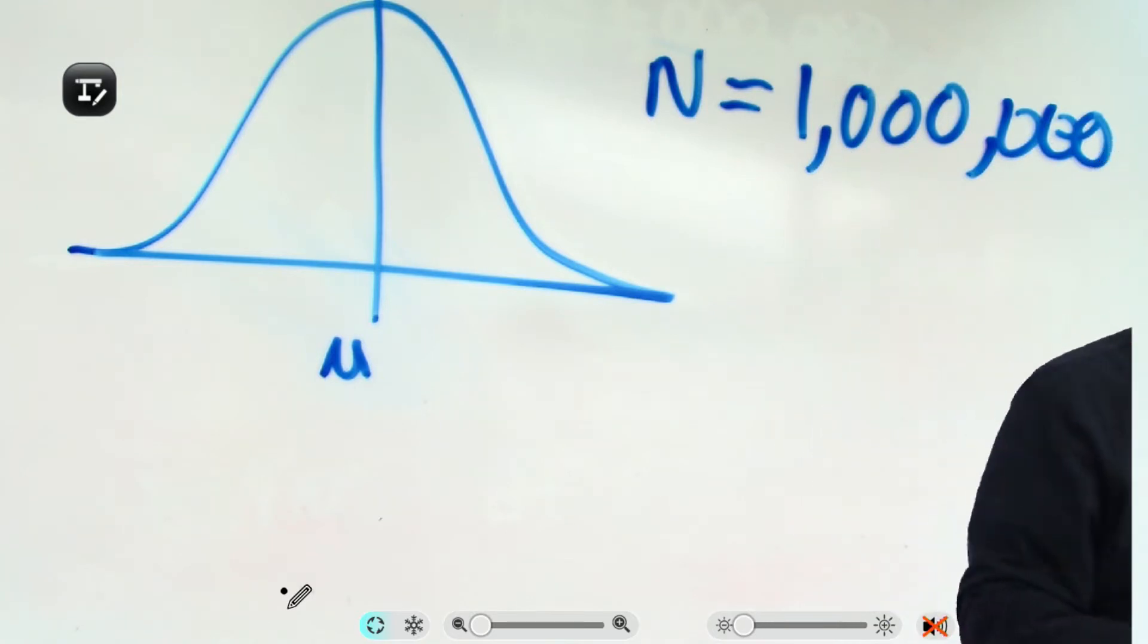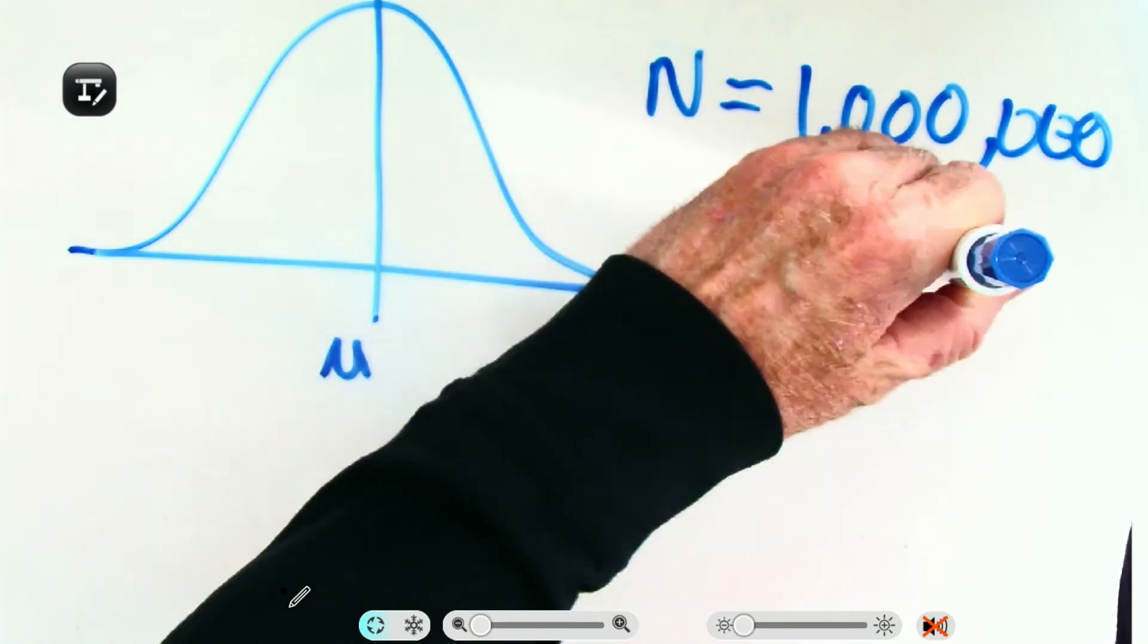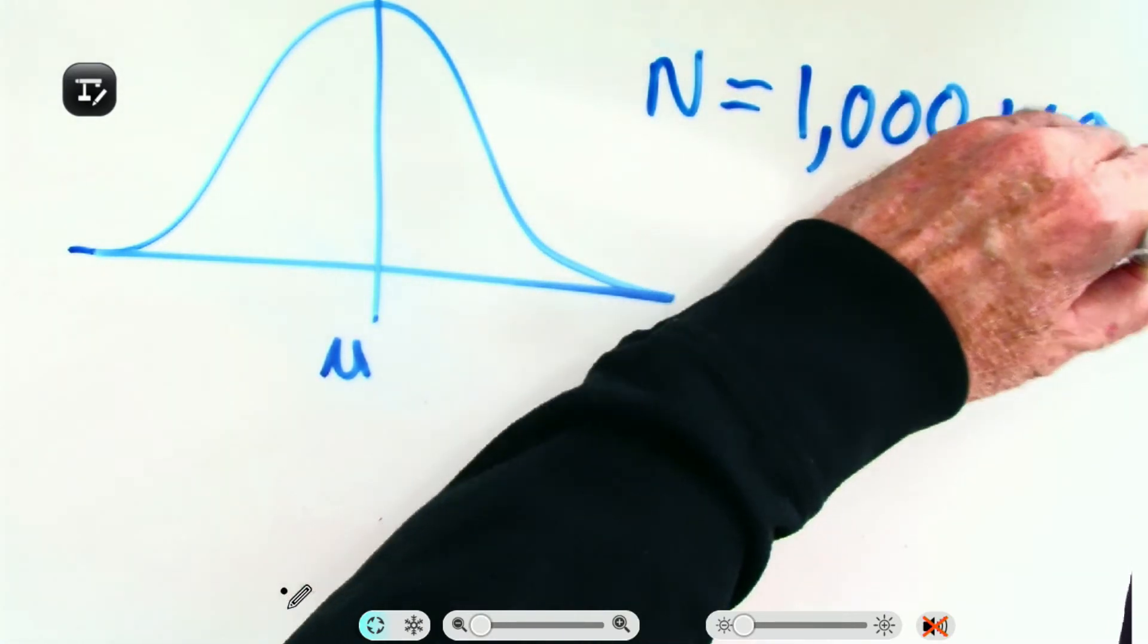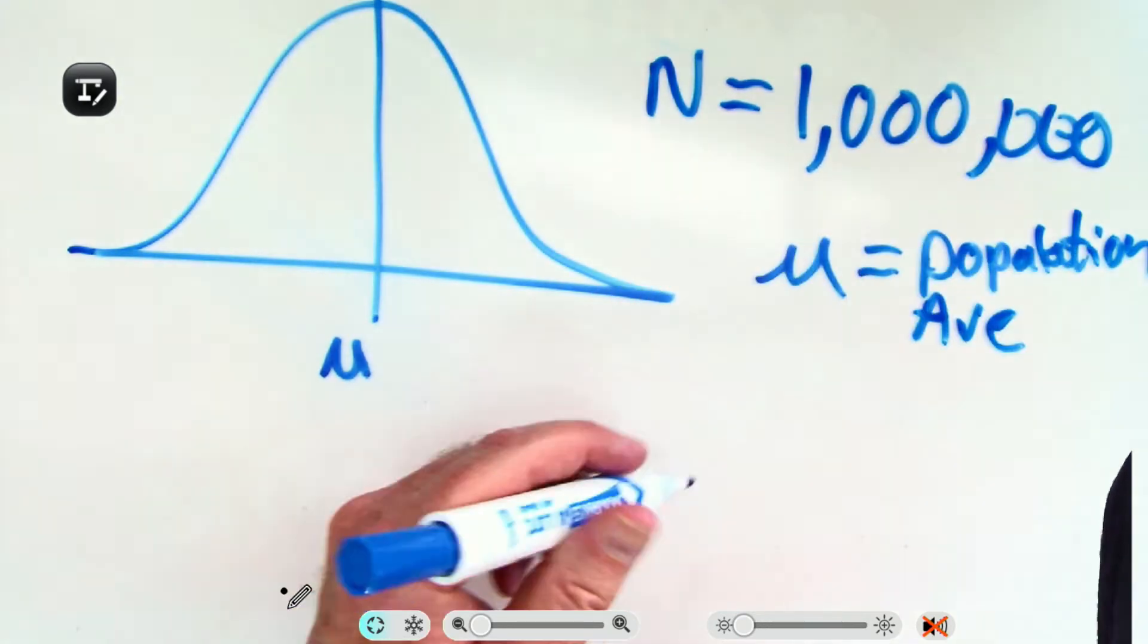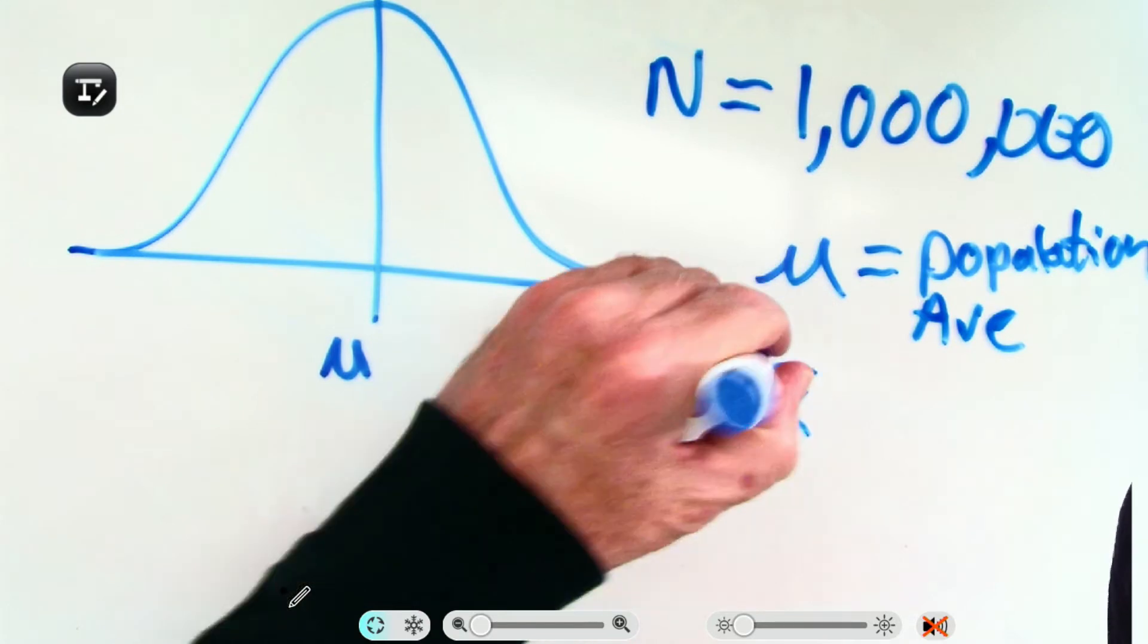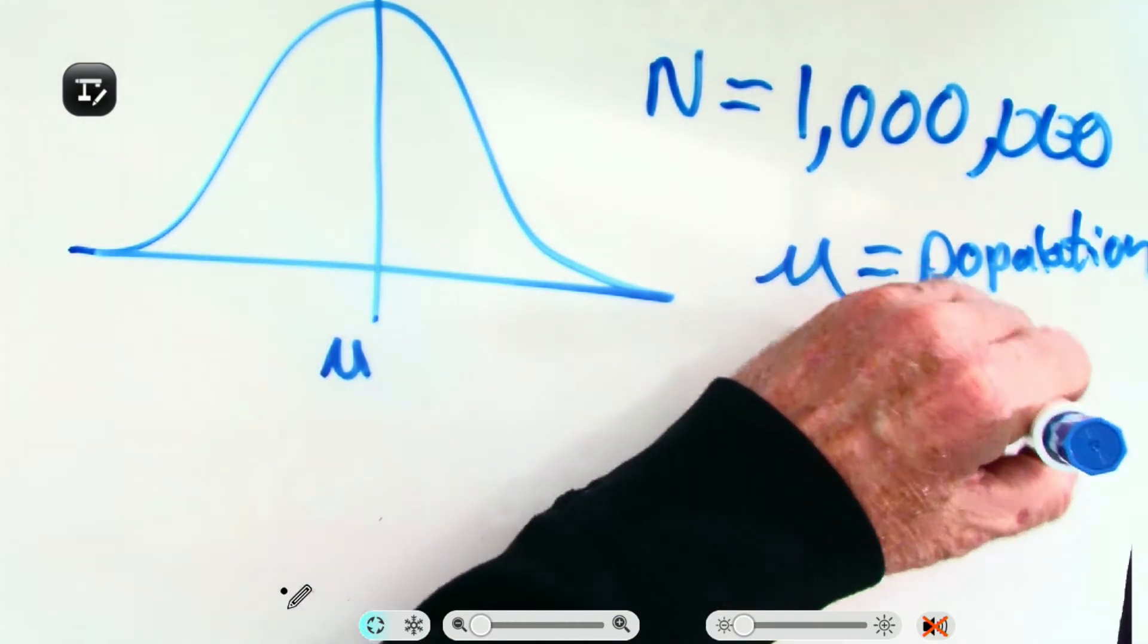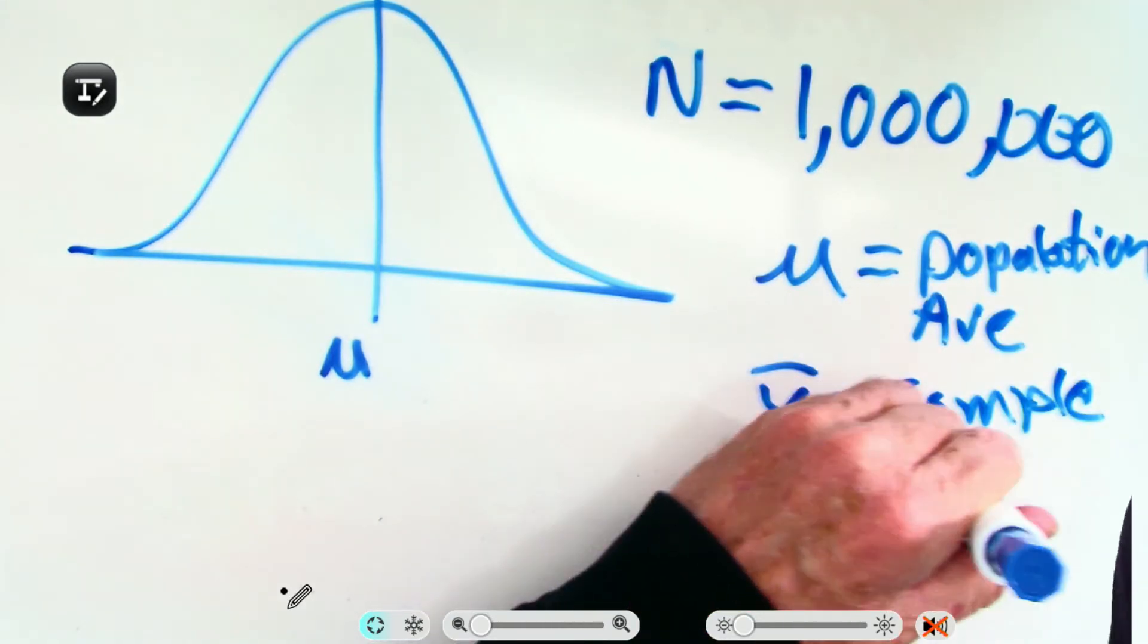If it's a sample, let me write this down. Mu equals population average, and another symbol we use is X bar. X bar equals a sample average.